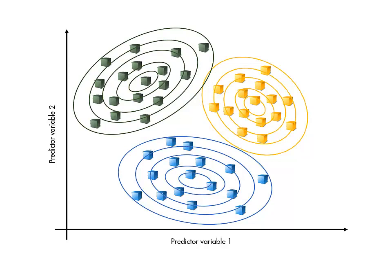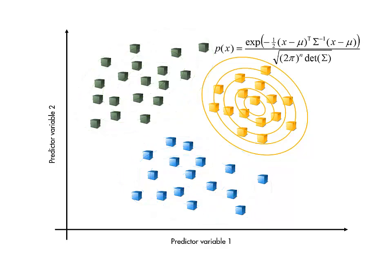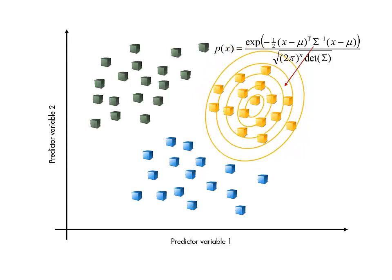Theoretically, we could fit an n-dimensional normal distribution to the observations in each class. This involves calculating the mean vector and covariance matrix for each class. These determine the center and shape of the distribution, respectively.